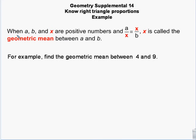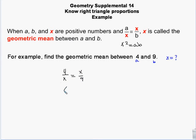So when A, B, and X are positive numbers and A over X is equal to X over B, X is called the geometric mean. And so what you have is X squared equals AB. Let's find the geometric mean between 4 and 9. In this case, 4 would be A and 9 would be B, and we're looking for X. So 4 over X equals X over 9, which gives me X squared equals 36 — which is the first problem on our warm-up. So X is the square root of 36, which is 6.